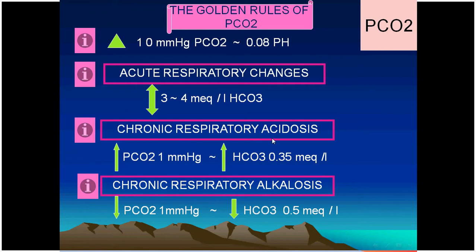In chronic respiratory conditions, there is adequate time for compensation. For every 1 mmHg increase in CO₂, bicarbonate is retained by approximately 0.35 mEq/L. For example, a COPD patient with PaCO₂ of 60 — elevated by 20 mmHg — will retain about 7 mEq/L of bicarbonate, so bicarbonate rises from 24 to 31 mEq/L.